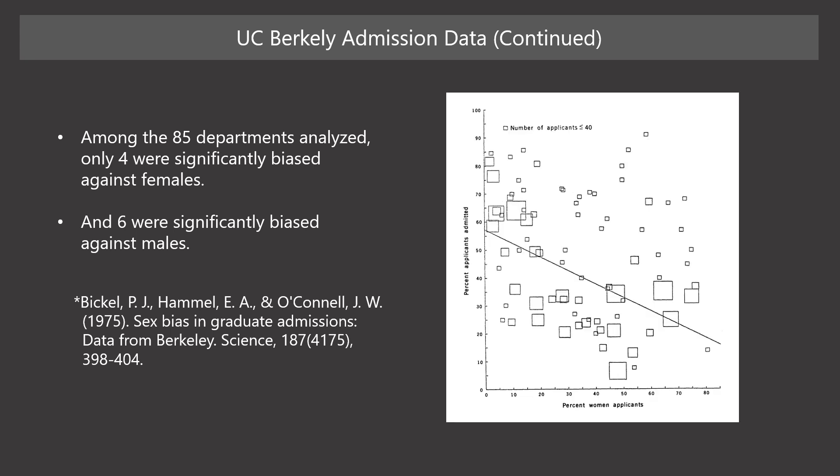We can see the reason in the scatter plot. The x-axis represents the percentage of women applicants in each department. The y-axis represents the total percentage of applicants admitted in each department, that is, the easiness of admission. The size of the square represents the number of applicants. The larger the square is, the more people apply to the department.